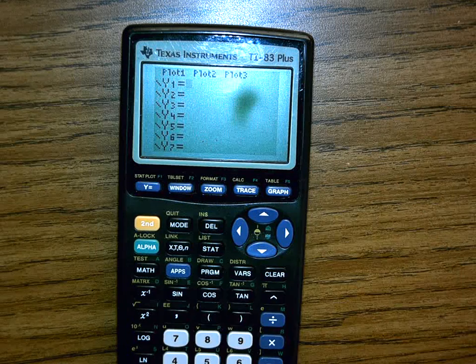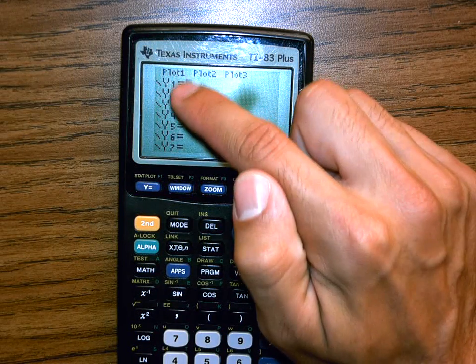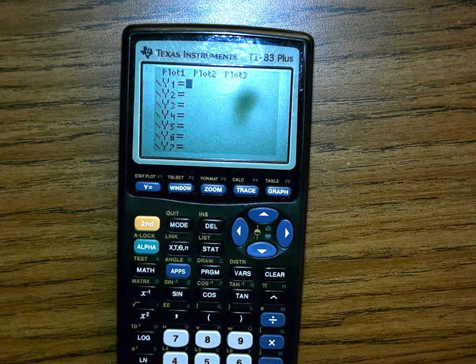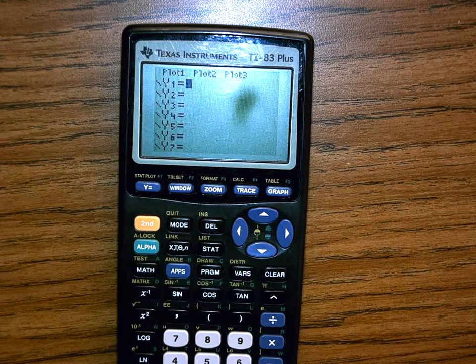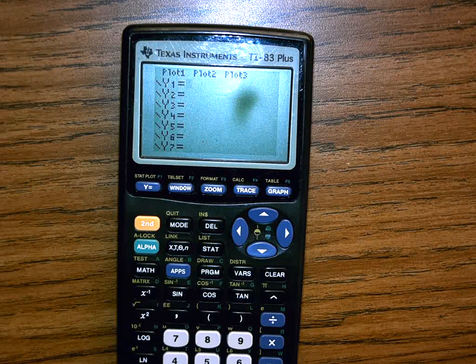I'm going to press that button and I should see Y1, Y2, Y3 all the way down. It's blank. If there's anything here, you need to delete it or clear it out. Delete, clear each one.